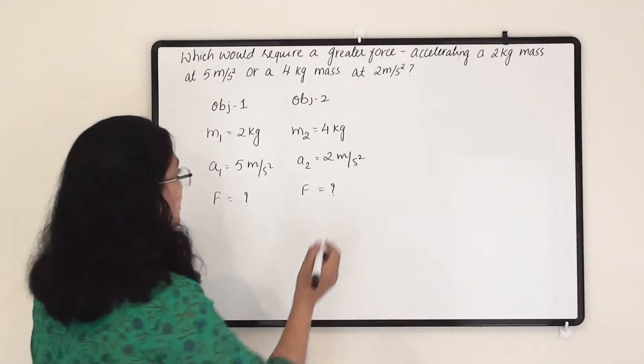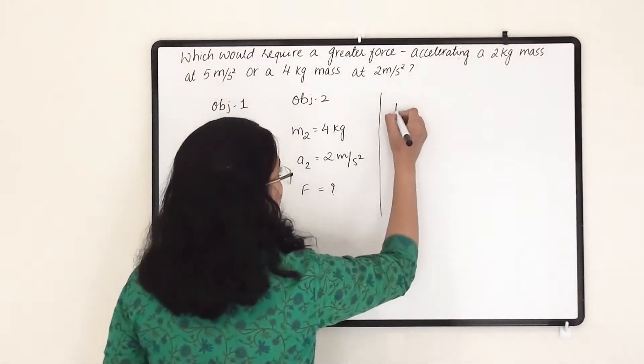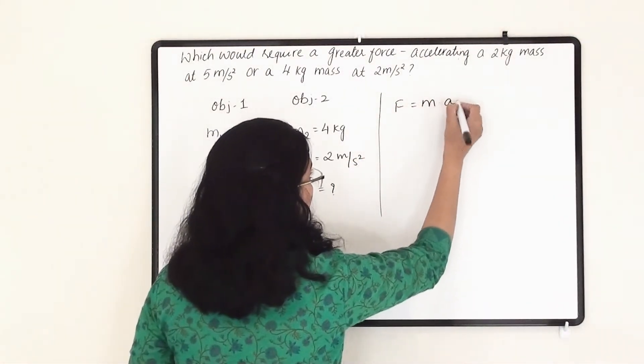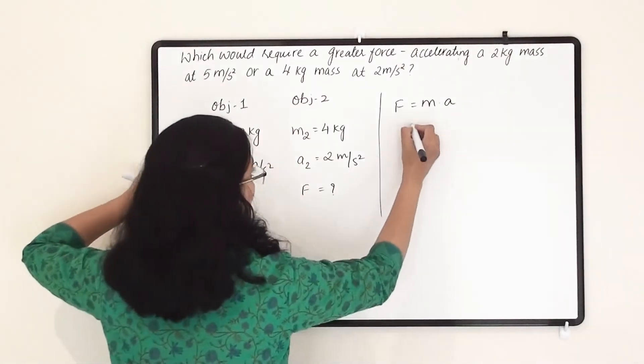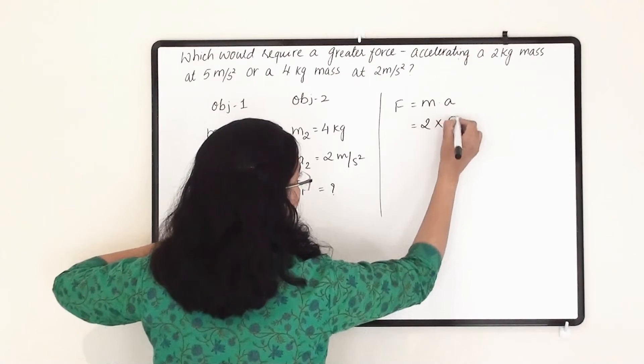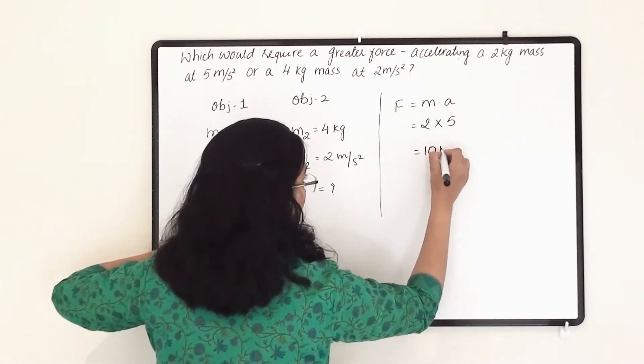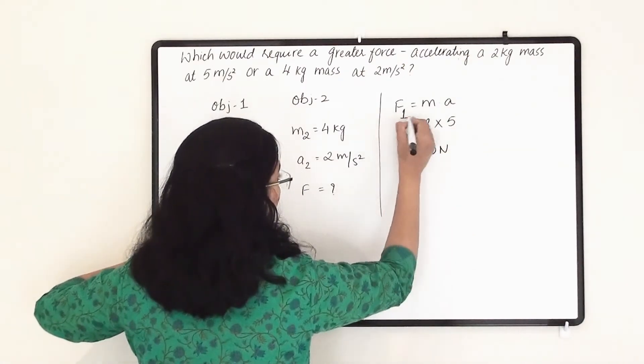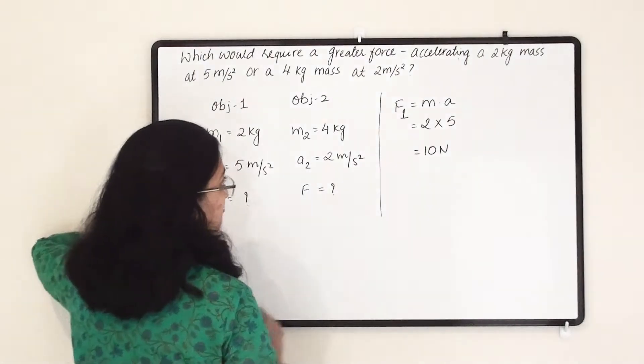So we know the equation that F equals m into a. So m here is 2 and a is 5. So here it will require 10 newton force. This is for object 1, so I am writing here F1.